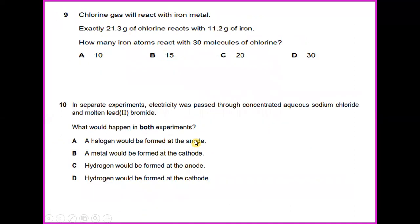Number 9: Chlorine gas will react with iron metal. Exactly 21.3 grams of chlorine will react with 11.2 grams of iron. How many iron atoms react with 30 molecules of chlorine? In this case, the answer is C, 20.